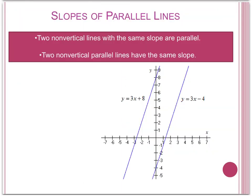Next, the slope of a line can tell many things, such as if two lines are parallel. If two lines have the same slope, then the two lines are parallel. For example, we have y equals 3x plus 8, and y equals 3x minus 4. Both of these equations are in the slope-intercept form. This is shown as y equals mx plus b, where m is the slope.